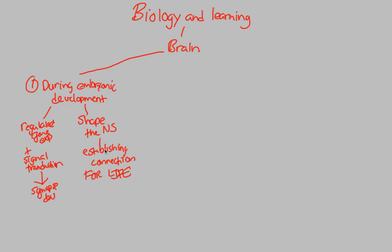As you are developing in the embryonic stage, you are shaping your nervous system through these synapse developments. This allows you to create a functioning brain that you can use for the rest of your life. So what happens once this development has ceased and once you are born?